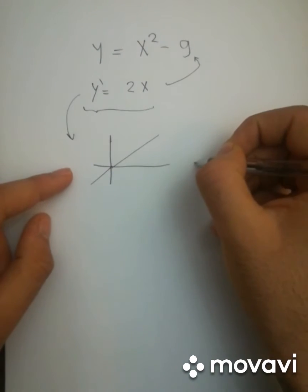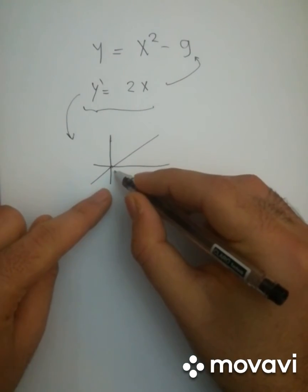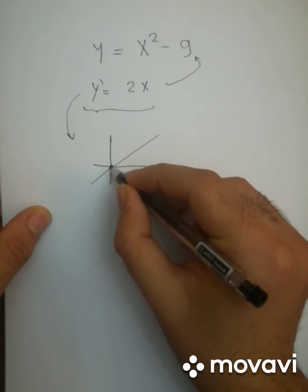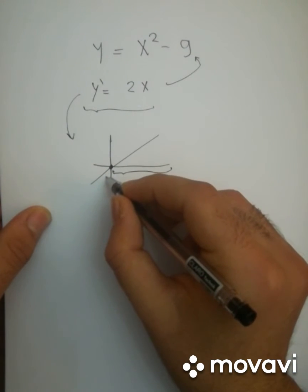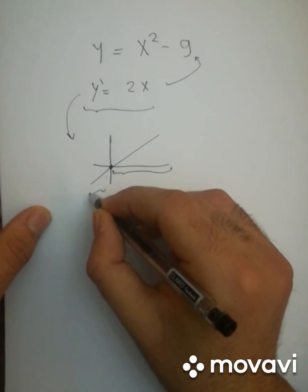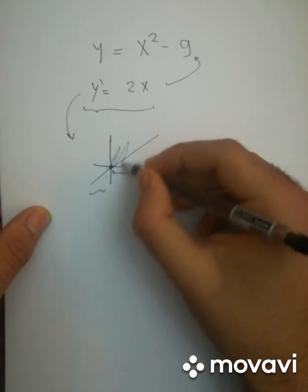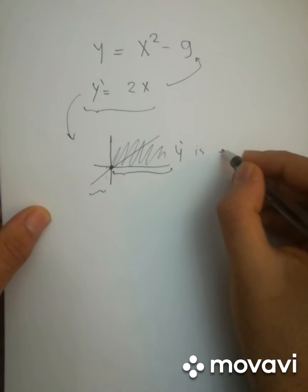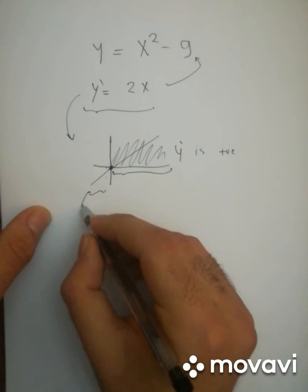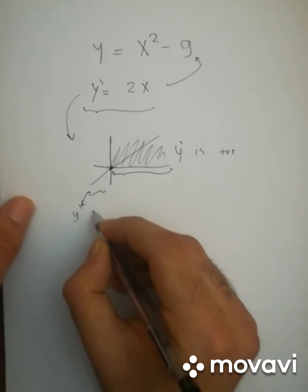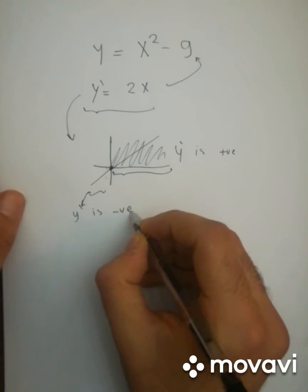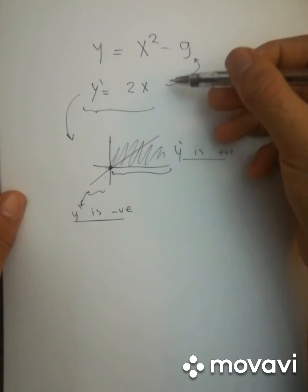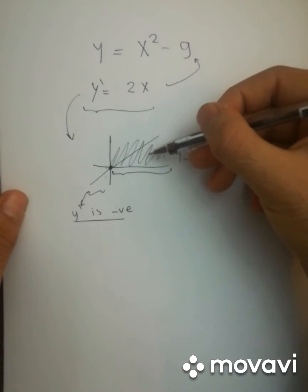Now looking at this function right over here, we can understand that this function is positive in this area, and it's neither increasing nor decreasing here, and it's negative here. So in this area, y-dash is positive, and in this area right over here, y-dash is negative. Now why do we care about the derivative of a function being positive or being negative?